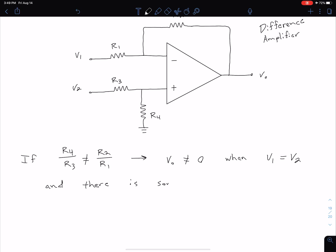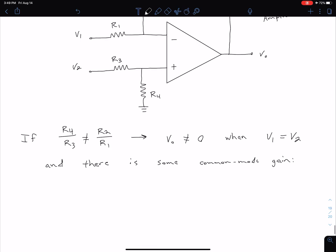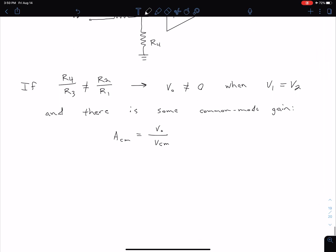So there is some common mode gain. If our output is zero for this common mode, we of course had a zero as our common mode gain, but now we have some non-zero common mode gain which we're going to call A sub cm for common mode. That's equal to V out divided by what we're introducing as V common mode, V cm, and I'll define that right now.